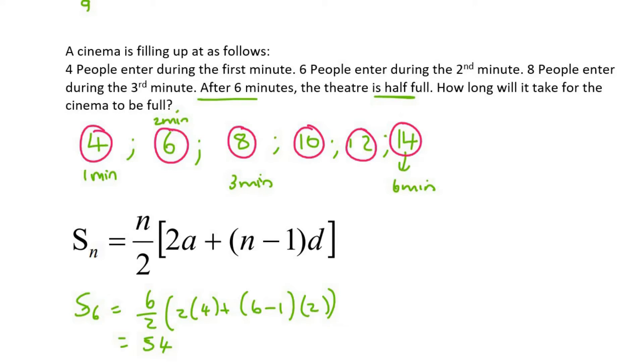They said that after six minutes, the theater is half full. So it means that this cinema can hold 108 people, because it's double 54. So the cinema capacity is 108 - there can be 108 people in total.